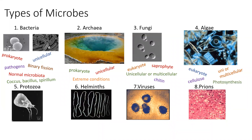Algae use photosynthesis to create their own food. You tend to find algae in aquatic environments. Some species are green and a lot of people think they are plants, but algae are not plants — they do not have a root structure, nor do they have leaves, which are some requirements to be a plant. Algae are not plants, but they do have a lot in common with plants, like being able to do photosynthesis and having cellulose in their cell wall.